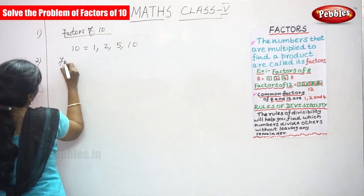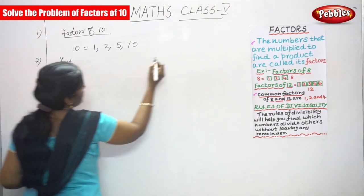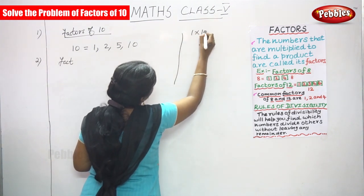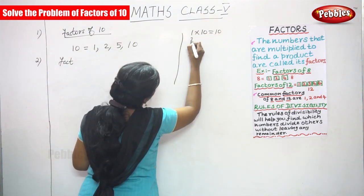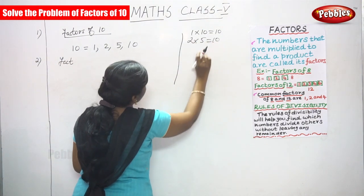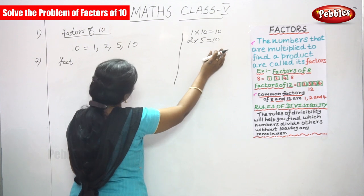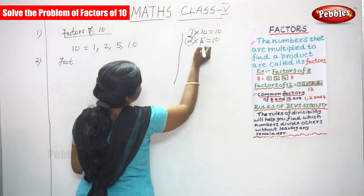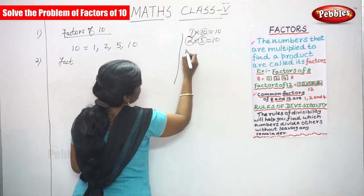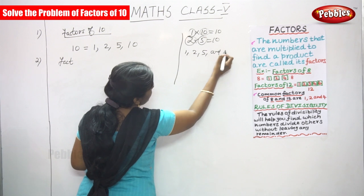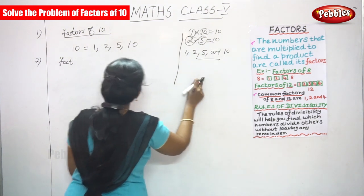Next, I will write the table here so you will get a clear idea. So 1 into 10 is equal to 10, 2 into 5 is equal to 10. So 1, 2, 5 and 10. These are the factors of 10.